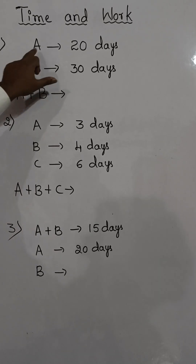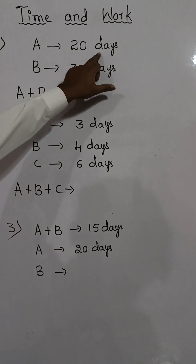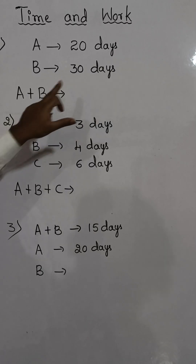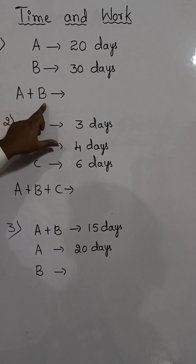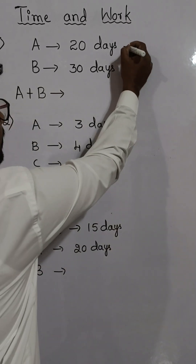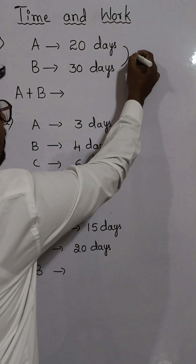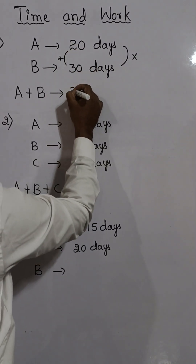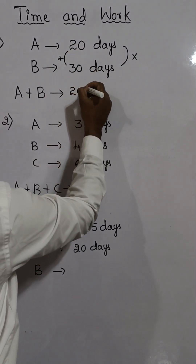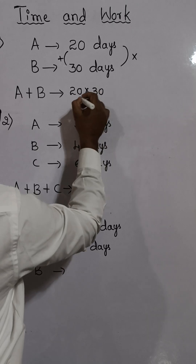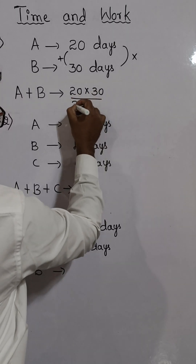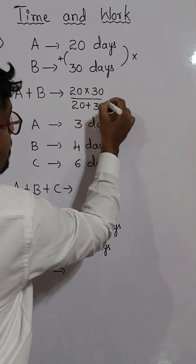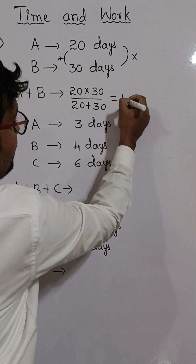A can complete a work in 20 days, and B can complete a work in 30 days. A and B together can complete the work using the formula: product of the two numbers divided by their sum. That is 20 into 30 divided by 20 plus 30, which equals 12 days.